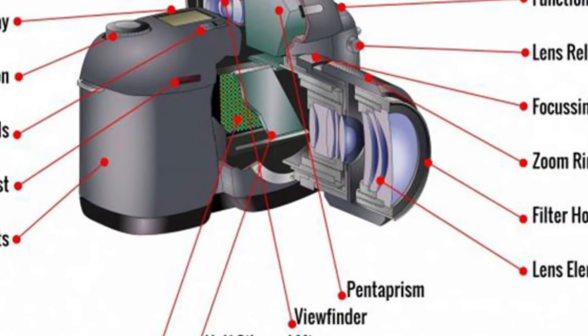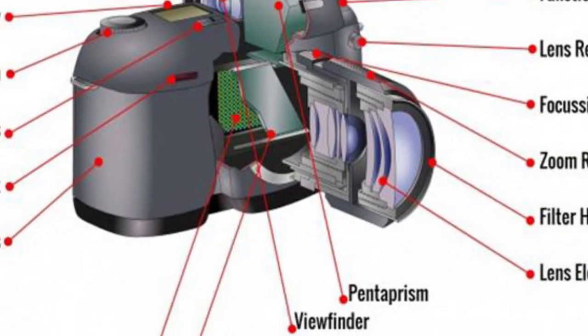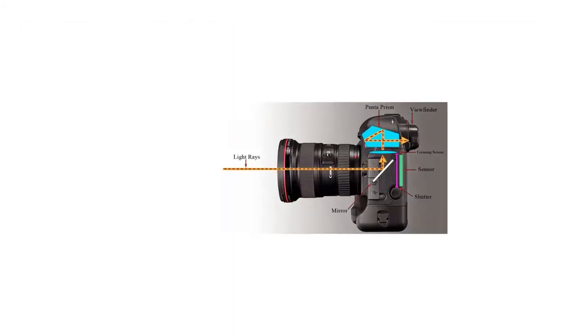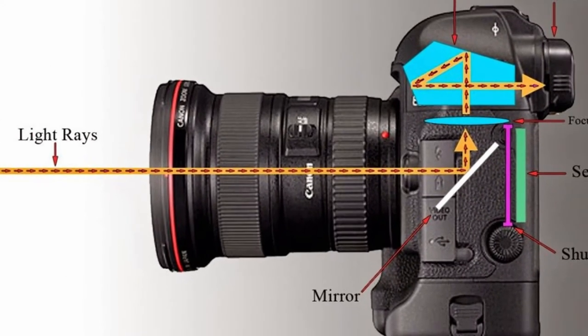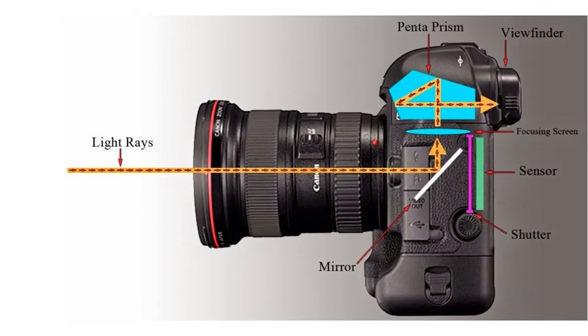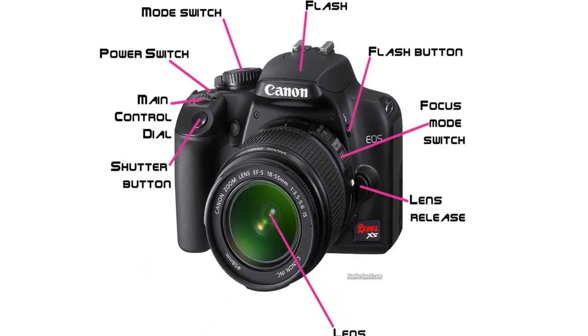Cameras can be divided into several major types, although most cameras operate in roughly the same way. There are a few notable differences, and it helps to know what type of camera you are using.